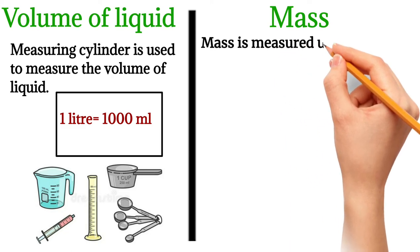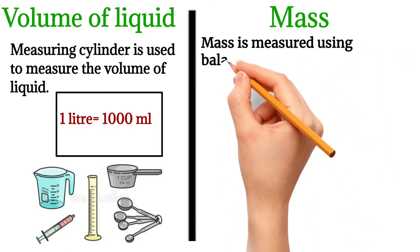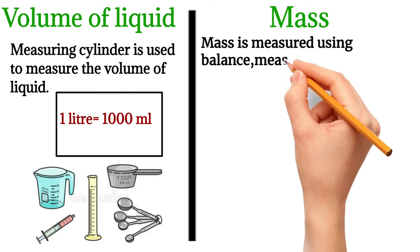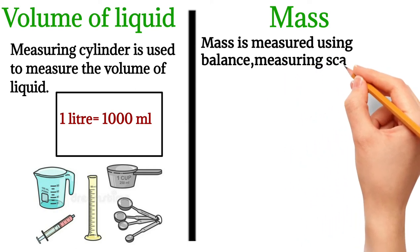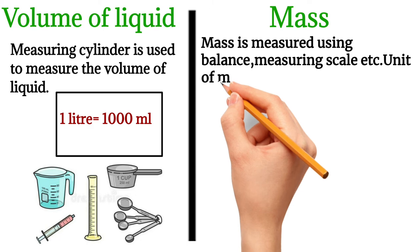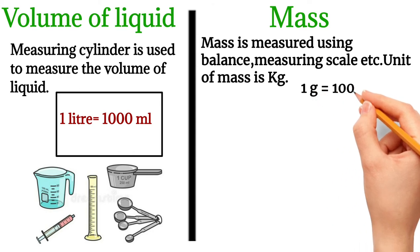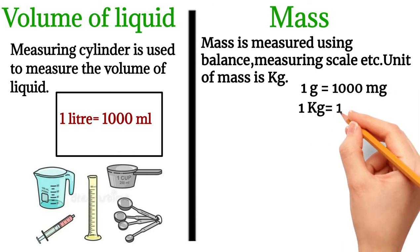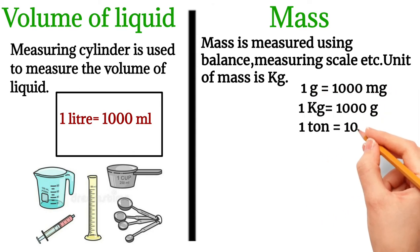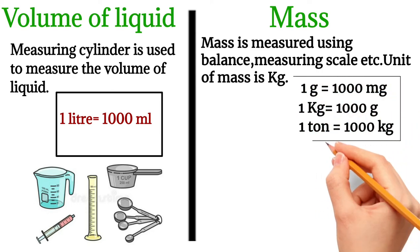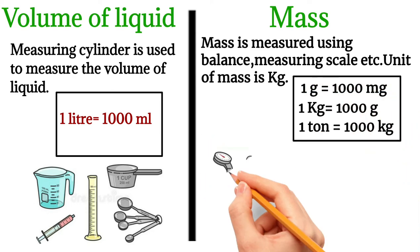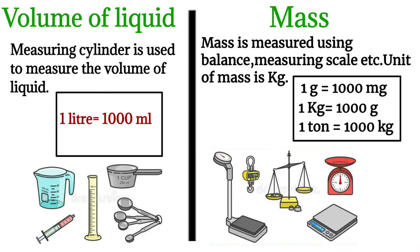Mass is measured using a balance or measuring scale. The unit of mass is kilograms. One gram is equal to 1000 milligrams. One kilogram is equal to 1000 grams. One ton is equal to 1000 kilograms. You can see the equipment below which helps to measure the mass.